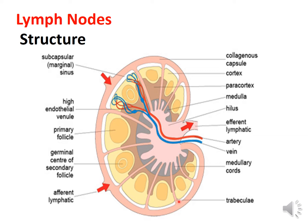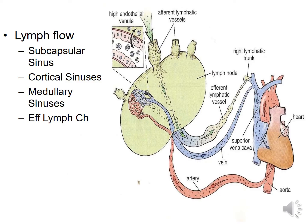The flow of lymph through a lymph node: the afferent lymphatic vessel brings lymph into the node, which passes through the subscapular sinus just below the capsule, then the cortical sinus, then the medullary sinus, and finally is collected by the efferent lymph vessel, which drains into the corresponding lymphatic trunk.